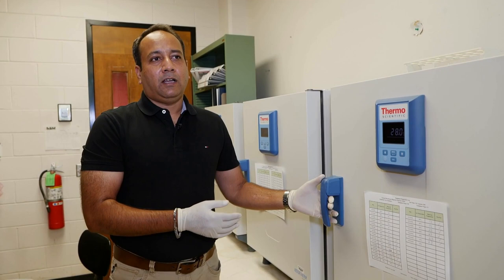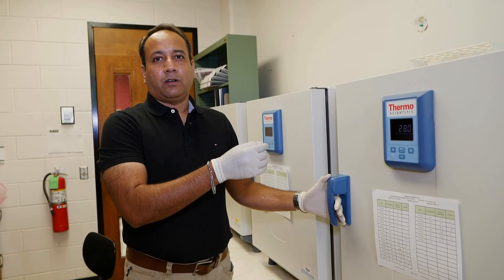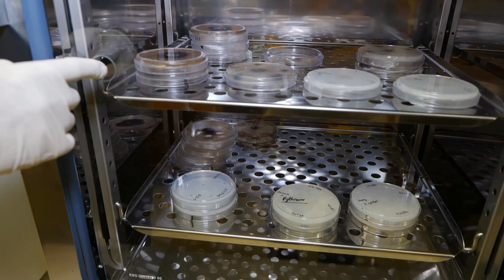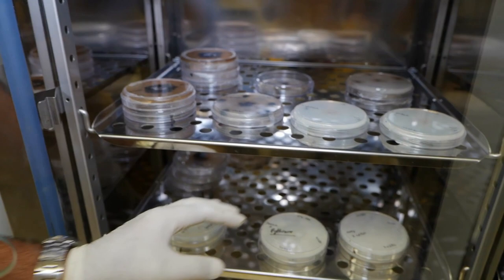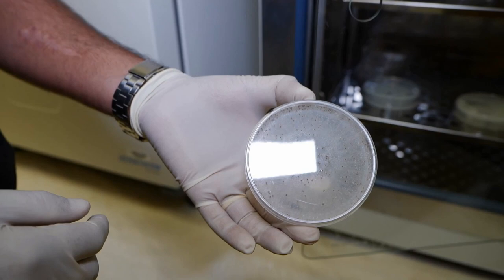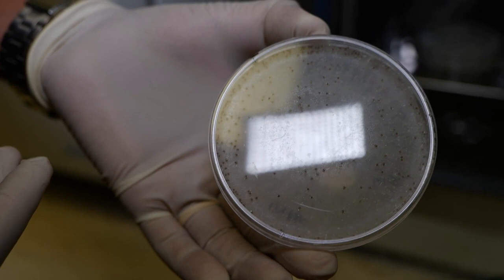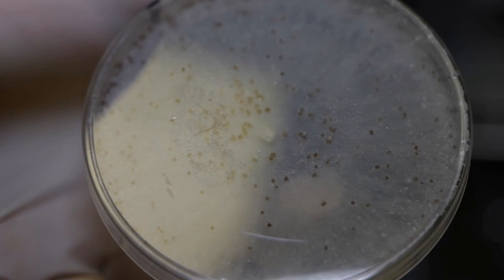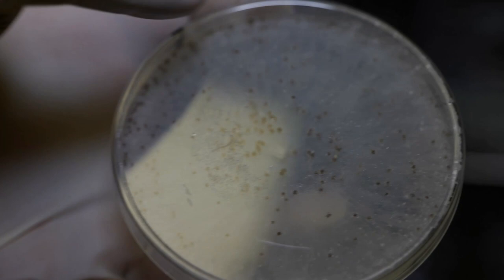Once we isolate the - once we plate the affected leaf tissue or the root tissue on the artificial media, then we bring them over here and we store them at a specific temperature so that the pathogen can start growing out of it. Here is a good example from hemp, industrial hemp. The plant was infected with the southern blight, and once we grow it on it, this is kind of a classical example where the southern blight is producing the sclerotia - mustard seed size and shape and color sclerotia. Once we see this, we are about 80 percent sure that this is southern blight.